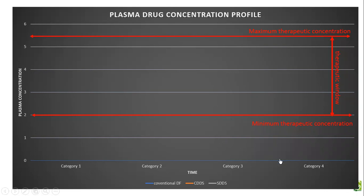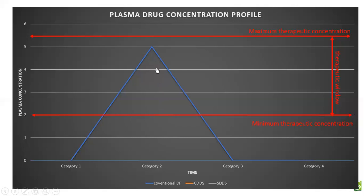When the level goes above the maximum therapeutic concentration, the drug is going to produce side effects or it might be lethal. If the drug concentration in the plasma is below the minimum therapeutic concentration, the drug is going to show no effect. So it is mandatory that whenever you give a drug, its level has to be within this therapeutic window. When we give a conventional dosage form, the concentration in the body increases, but as the drug undergoes metabolism and excretion, the level inside the plasma keeps decreasing until it falls below the minimum therapeutic concentration. After this, you have to take another dose, so again the concentration will rise, causing fluctuation in plasma drug concentration.